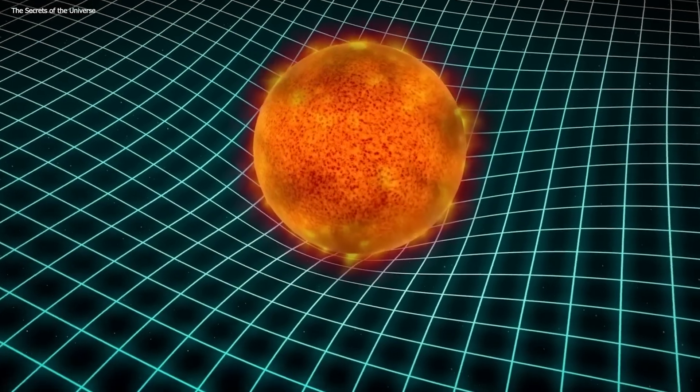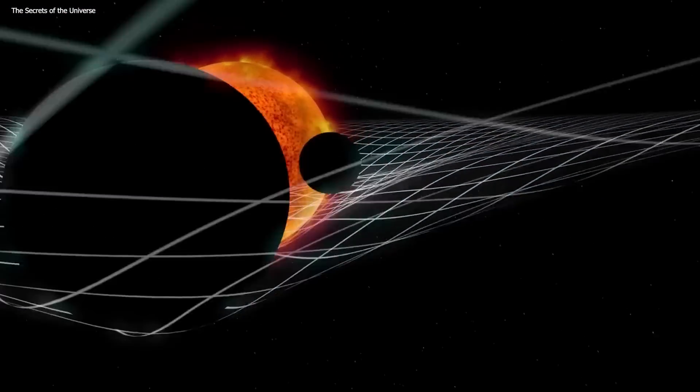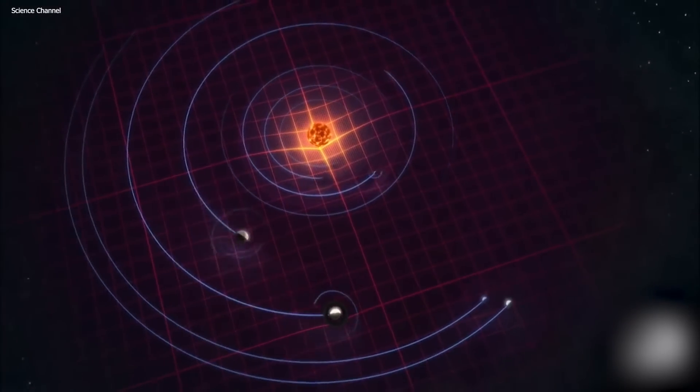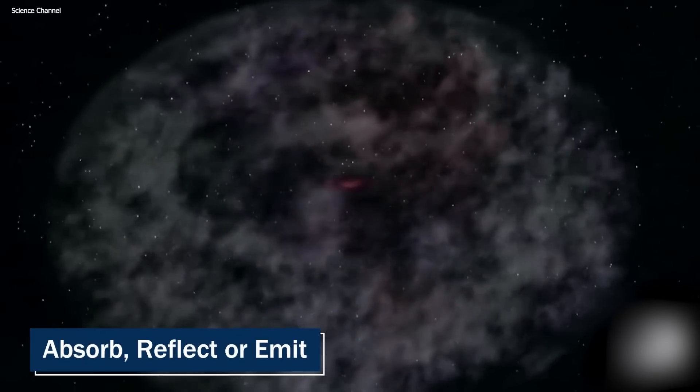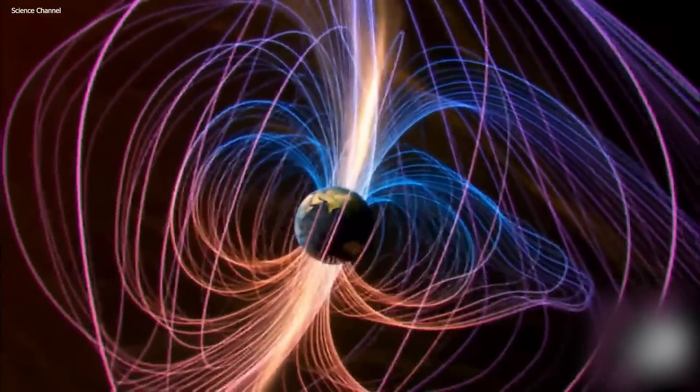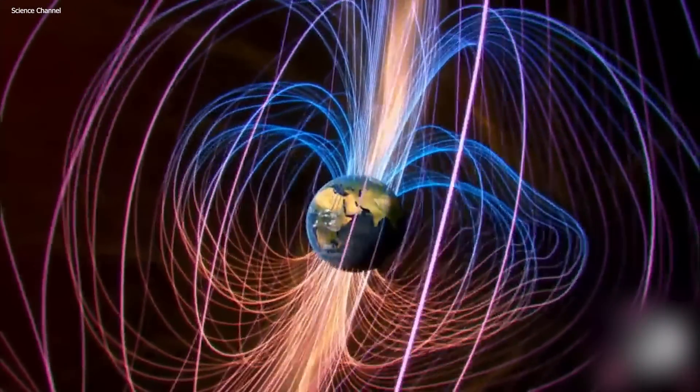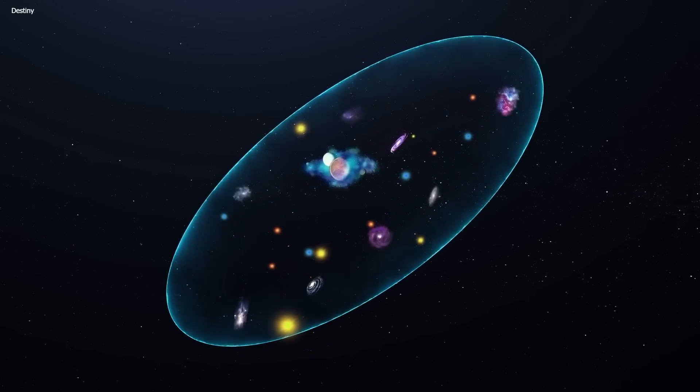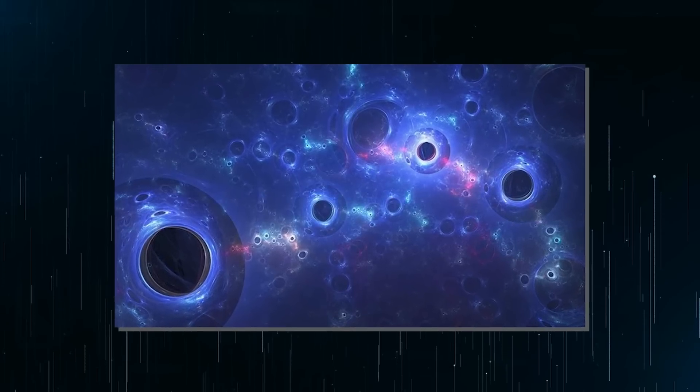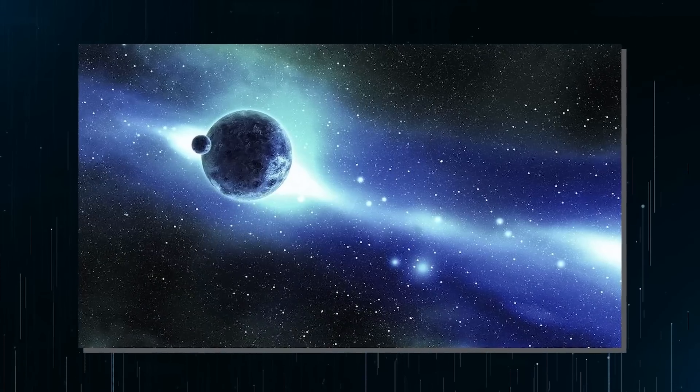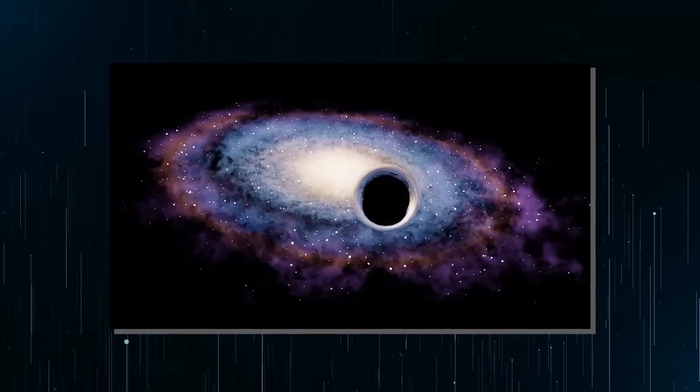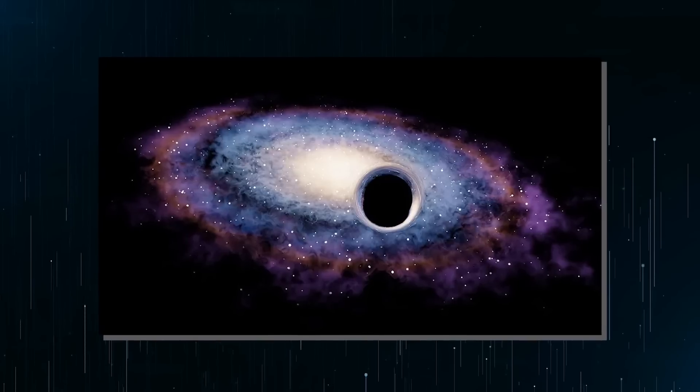Dark matter is like a ghost, a shadow, an unseen force that dominates the universe. It's impossible to detect because it doesn't interact with electromagnetic force, which means it doesn't absorb, reflect, or emit light. However, it exerts a powerful gravitational force on the visible matter, holding galaxies together and controlling their movements. The frightening truth is that dark matter outweighs visible matter by roughly 6 to 1, making up 27% of the universe. It's like a silent predator lurking in the shadows waiting to strike.